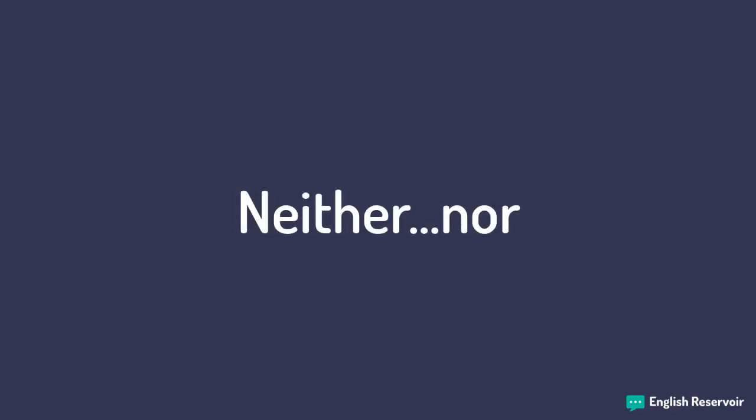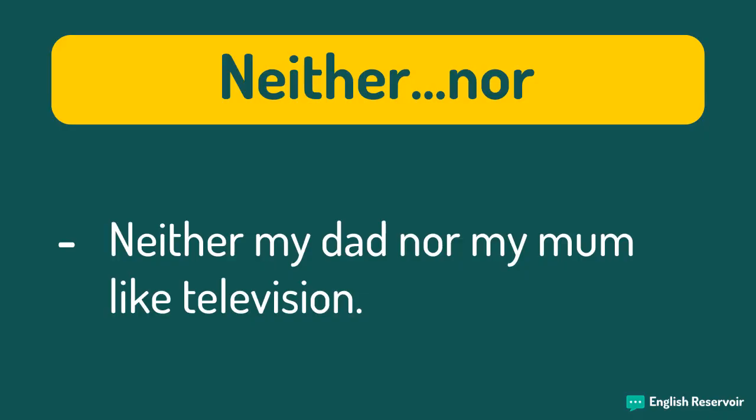Neither, nor. Use neither nor to make two things, people, or experiences negative. Neither my dad nor my mom like television. Here there are two people — dad and mom — who don't like television, so we can use the correlative conjunction neither, nor.